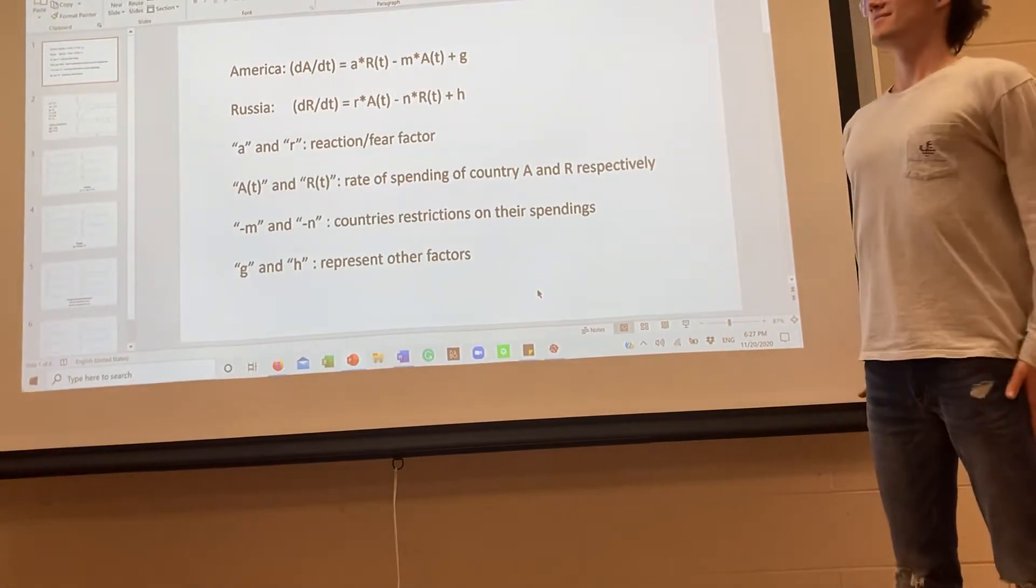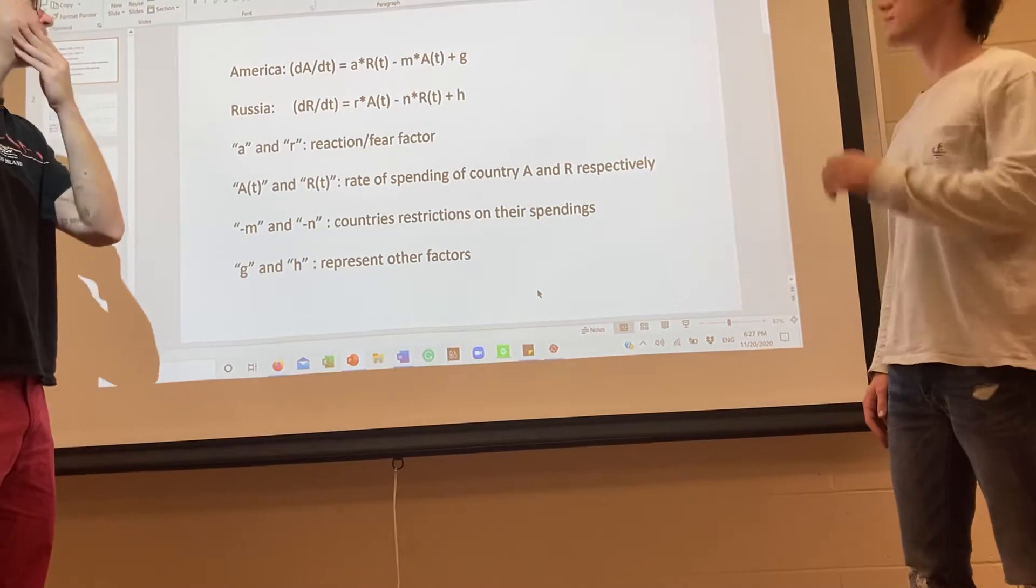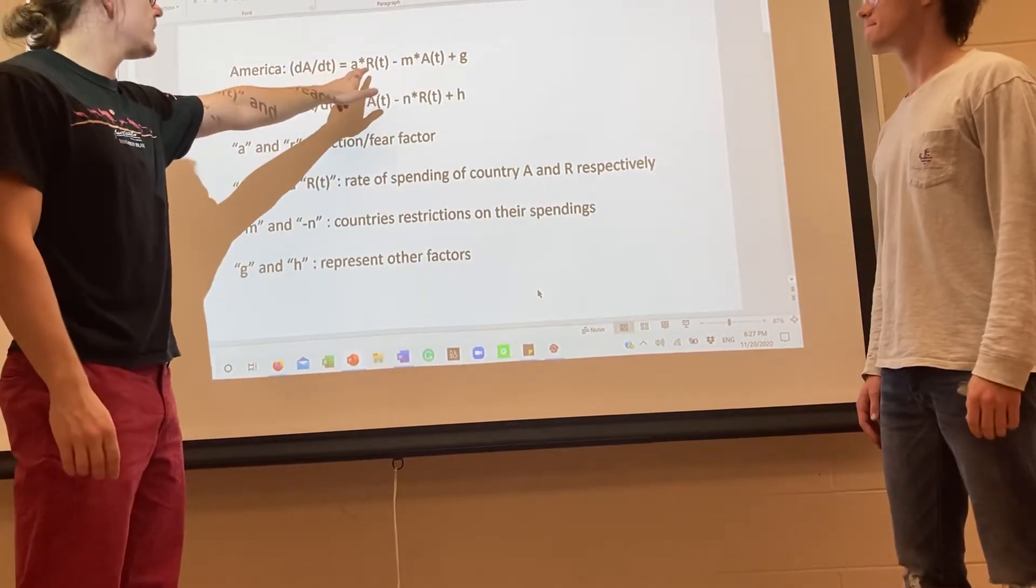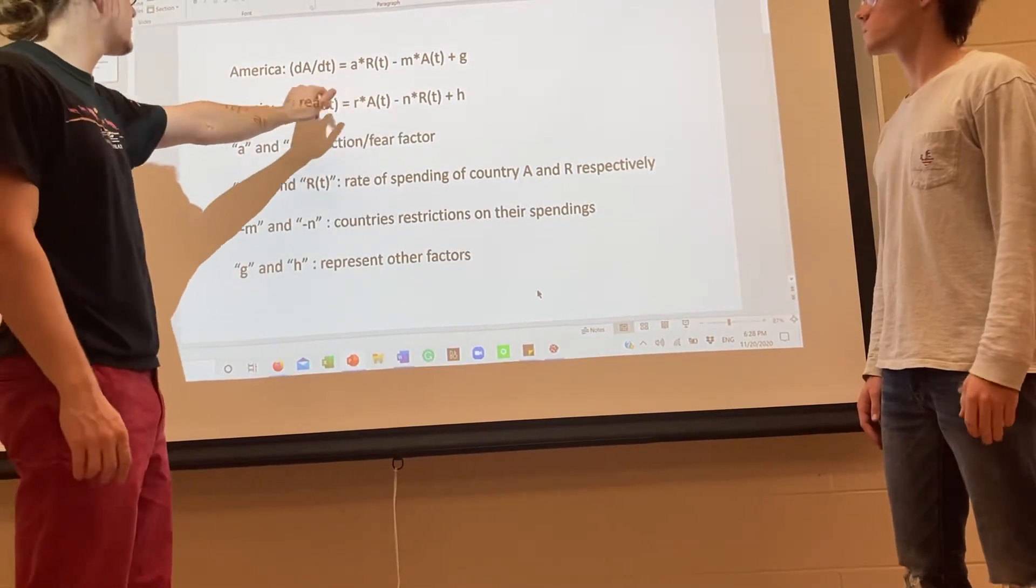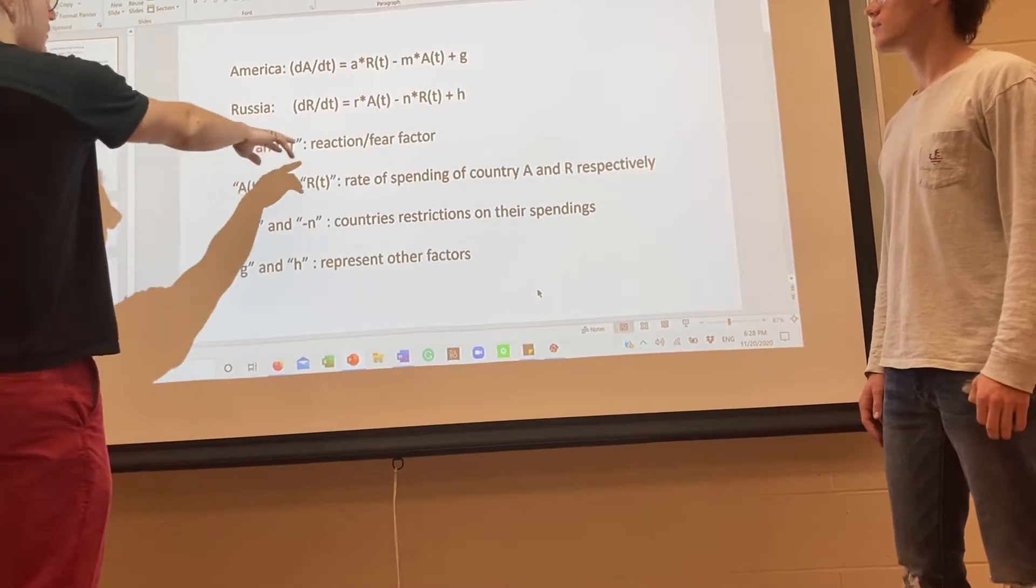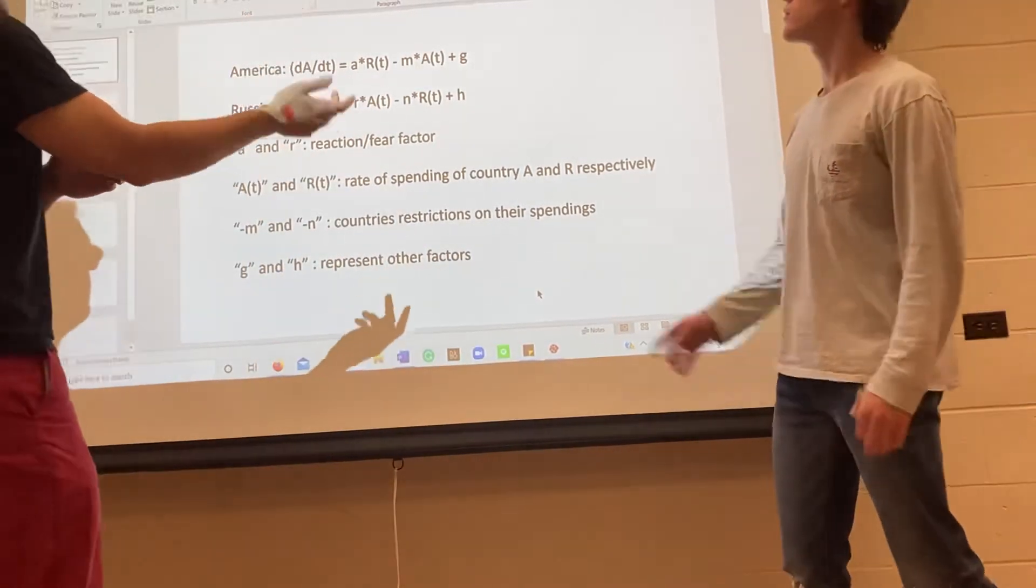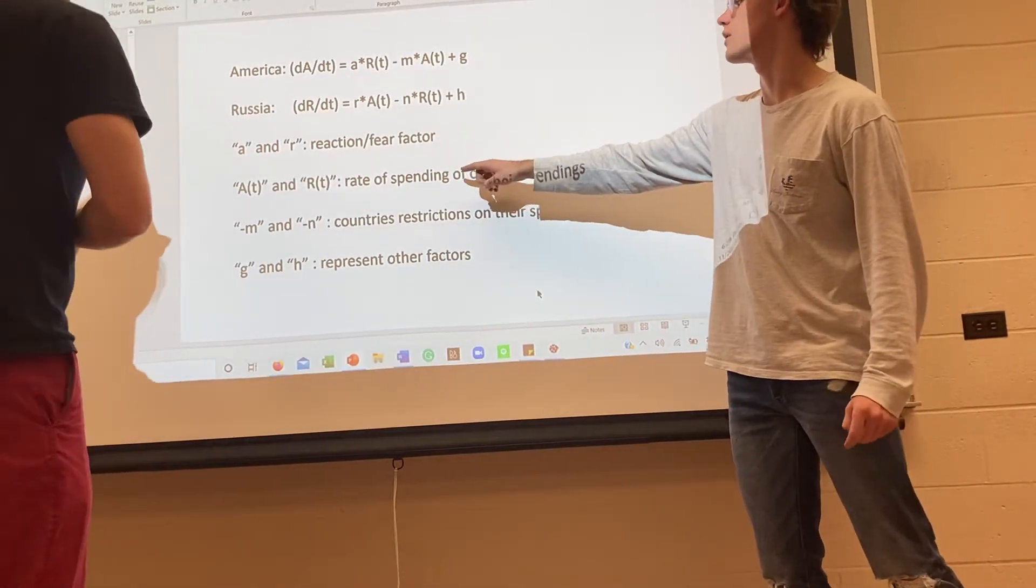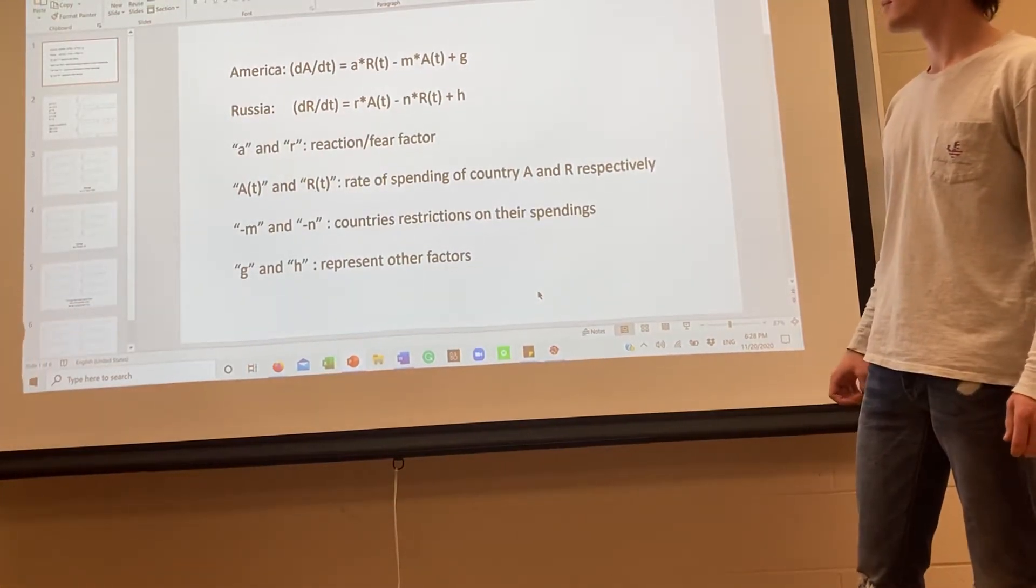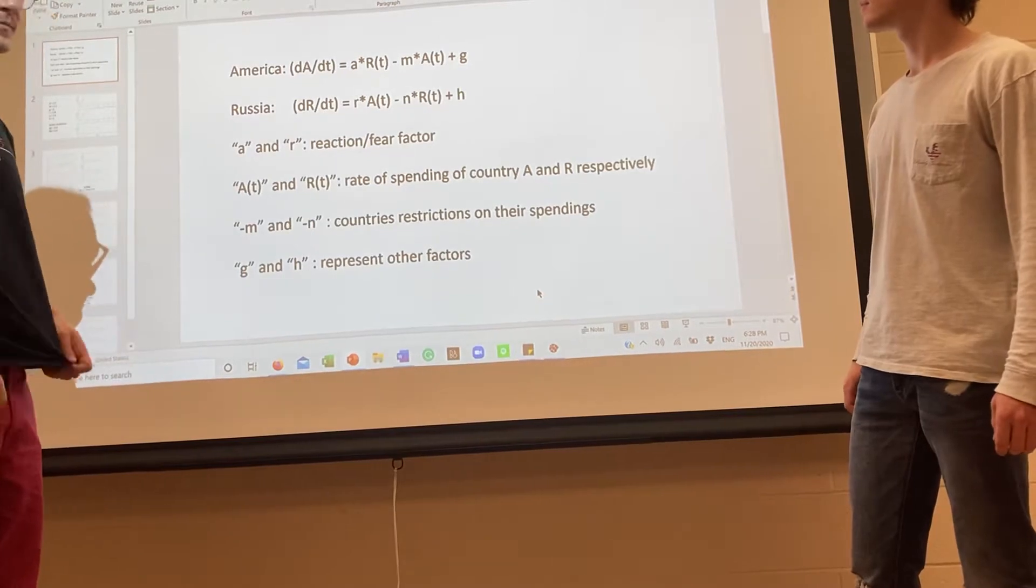So this is our problem, the Richardson's arms race model. It's two equations given to represent two countries in an arms race. We have two equations to represent two different countries, America and Russia. A and R are reaction fear factors - the rate at which they react to the other country's spending. M and N are the country's restrictions on their spending. And H and D represent other factors, which could be UN sanctions or trade deals with other countries or diplomatic issues.